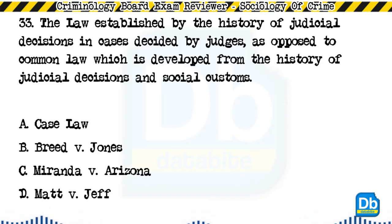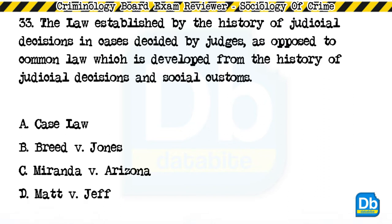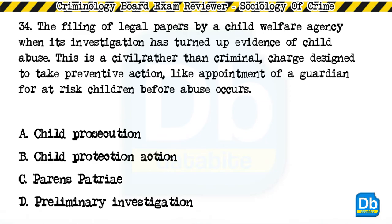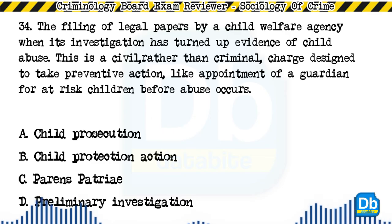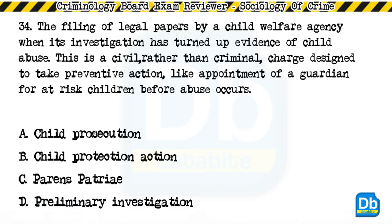Question 33: The law established by the history of judicial decisions in cases decided by judges, as opposed to common law which has developed from judicial decisions and social customs: a) case law, b) Breed versus Jones, c) Miranda versus Arizona, d) Matt versus Jeff. The answer is A, case law. Question 34: The filing of legal papers by a child welfare agency when its investigation has turned up evidence of child abuse — a civil rather than criminal charge designed to take preventive action: a) child prosecution, b) child protection action, c) parens patriae, d) preliminary investigation.